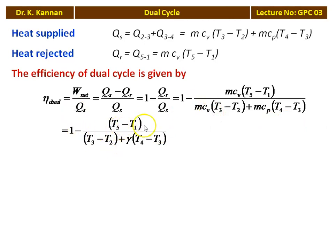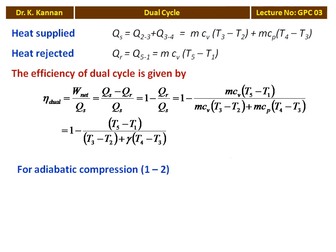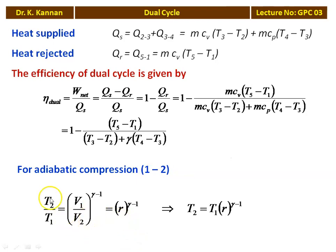Simplifying, efficiency = 1 − (T5 − T1) / [(T3 − T2) + γ(T4 − T3)], where Cₚ/Cᵥ = γ. There are 5 temperatures involved, and measuring temperatures directly is not possible in a thermodynamic cycle, so we convert this equation into measurable quantities. For every process, we express the temperatures in terms of pressure ratio, volume ratio, or compression ratio. For the adiabatic compression process 1-2: T2/T1 = (V1/V2)^(γ−1) = R^(γ−1), so T2 = T1 · R^(γ−1), where R = V1/V2 is the compression ratio.